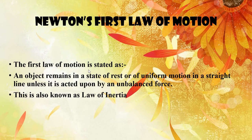The first law of motion is stated as: an object remains in the state of rest or of uniform motion in a straight line unless it is acted upon by an unbalanced force. This law is also known as the law of inertia.